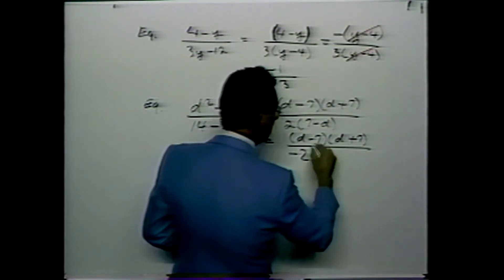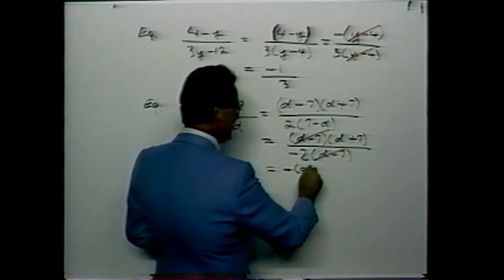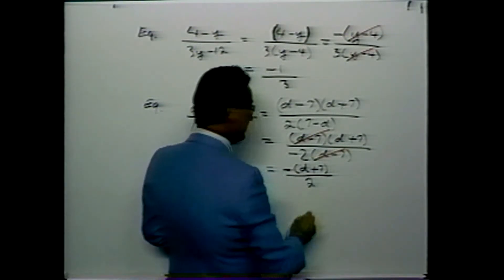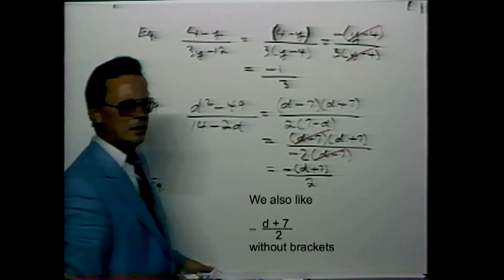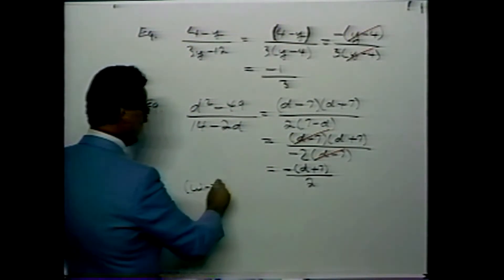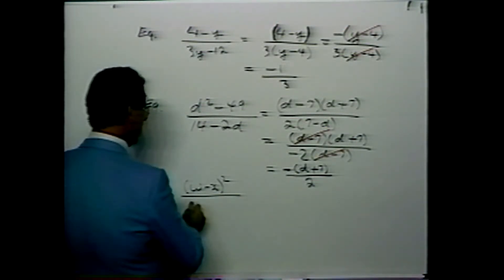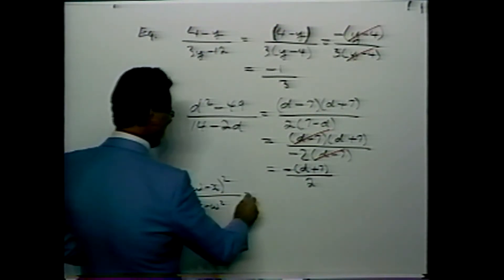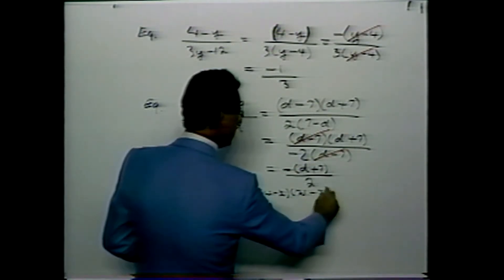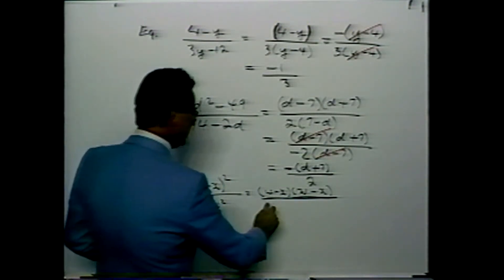Next: d squared minus 49 over 14 minus 2d. The difference of squares factors into d minus 7 multiplied by d plus 7. In the denominator, the common factor is 2, giving 2 times 7 minus d. We then have d minus 7 times d plus 7 over negative 2 times d minus 7. Cancelling d minus 7 from numerator and denominator leaves d plus 7 over negative 2.